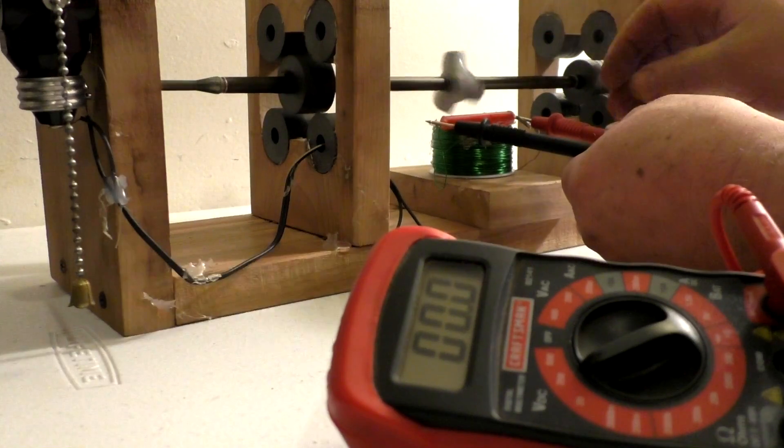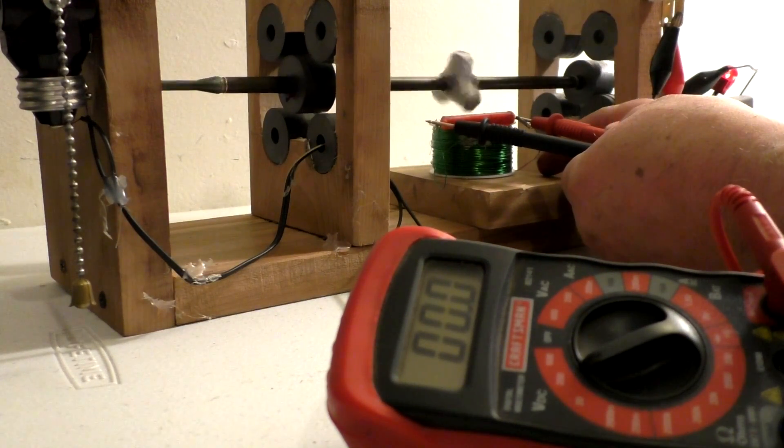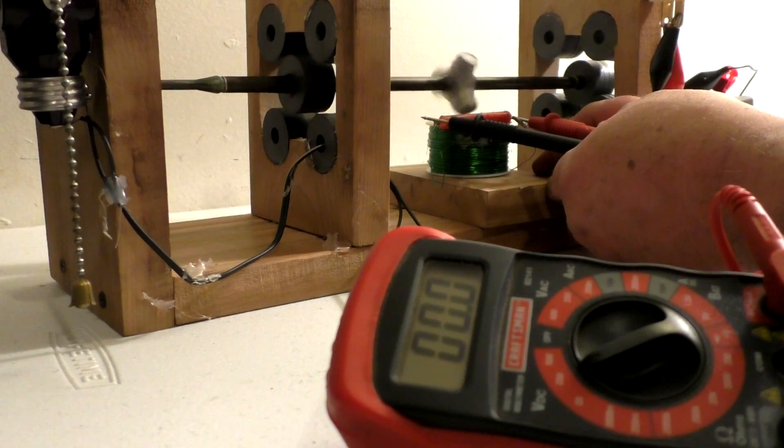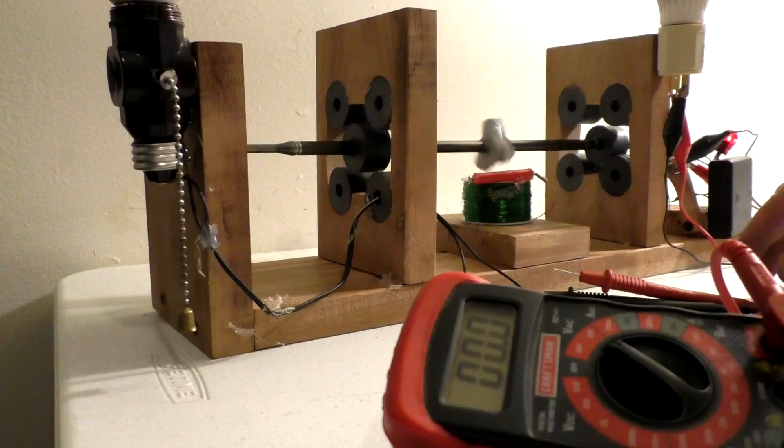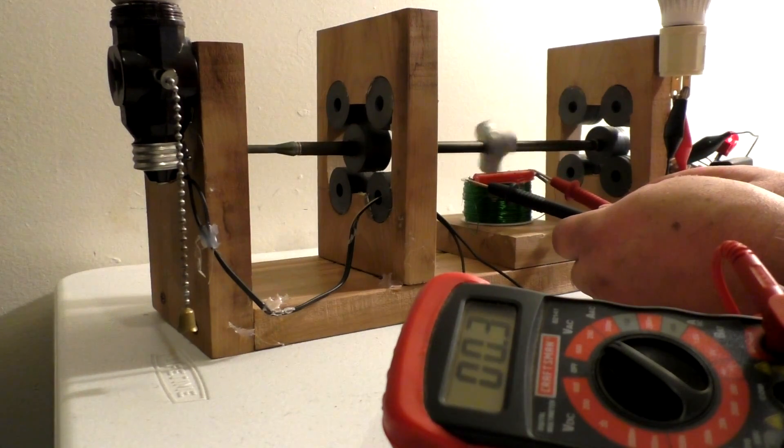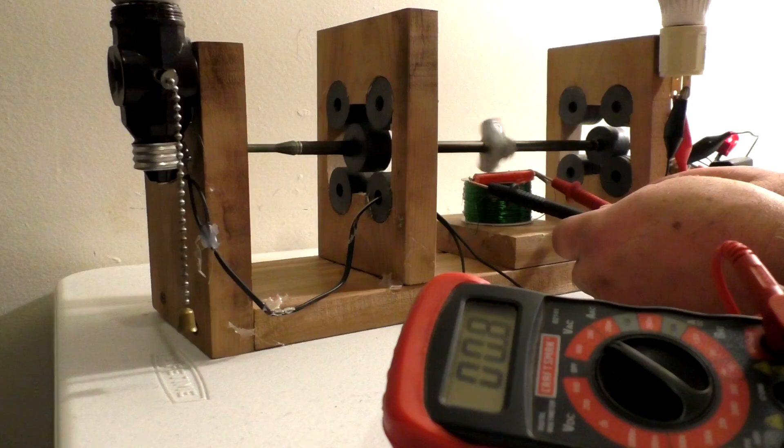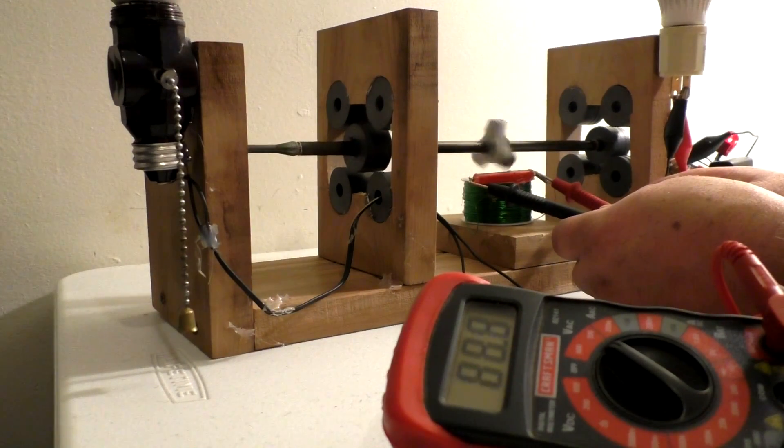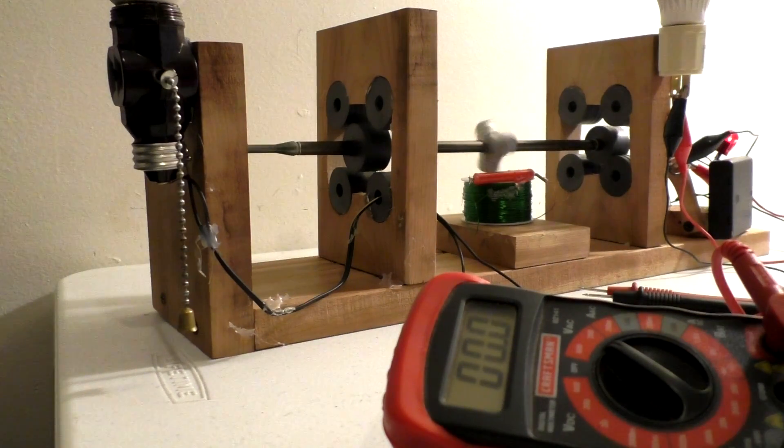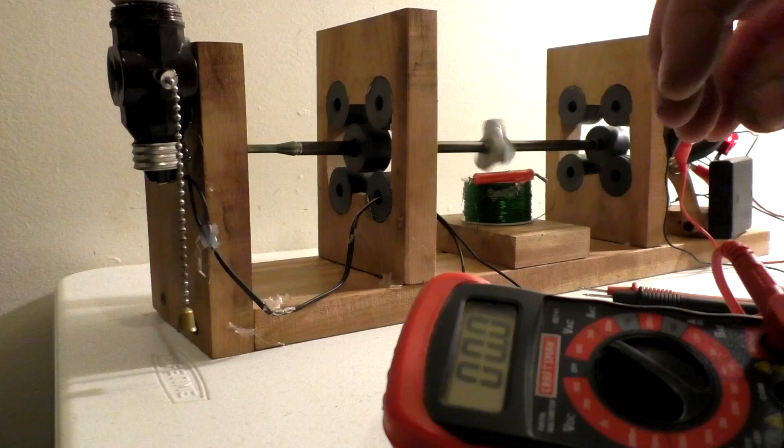Oh, it's still going through that coil, but that reed switch, it's not touching. Or the magnet's not opening and shutting the reed switch. Now I got AC volts.